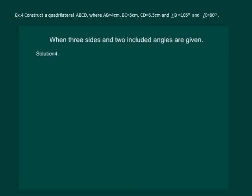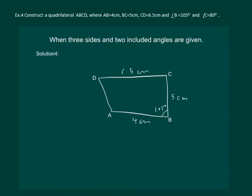Let us read the question and draw a rough figure of the quadrilateral. Construct a quadrilateral ABCD where AB is equal to 4cm, BC is equal to 5cm, CD is equal to 6.5cm, angle B is equal to 105 degrees, and angle C is equal to 80 degrees.